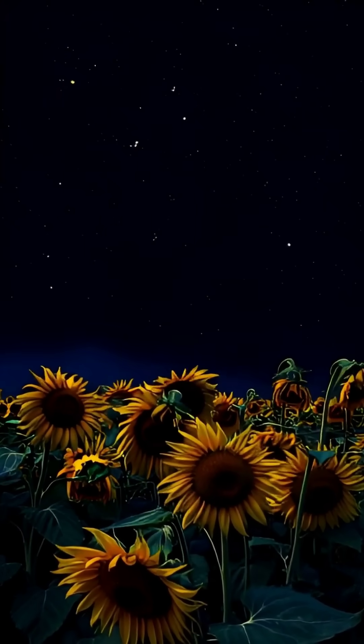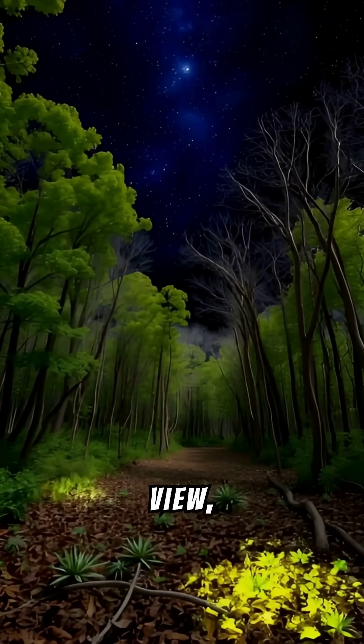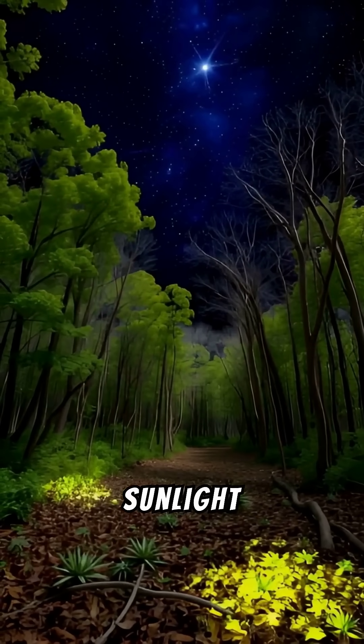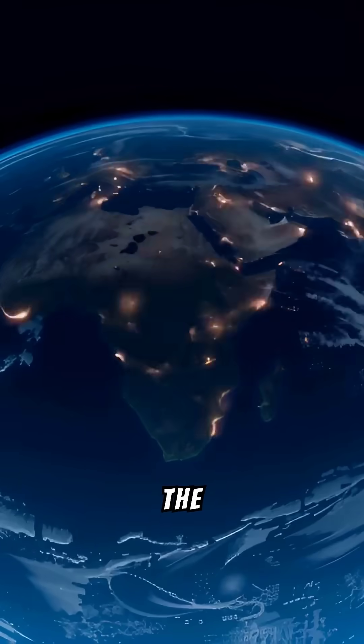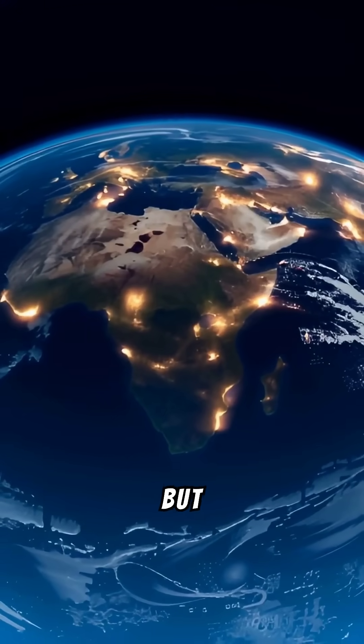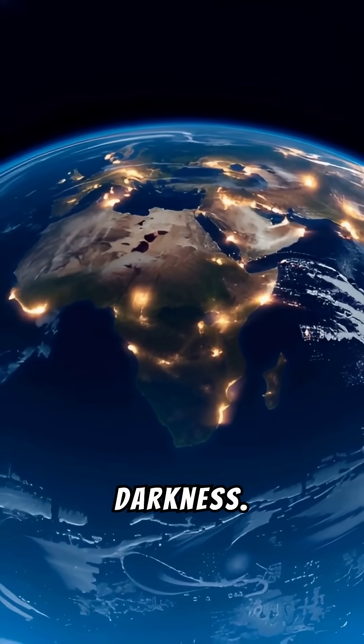The moon and the planets of the solar system would disappear from our view, since they would have no sunlight to reflect. The stars would still be visible, but the Earth would enter perpetual darkness.